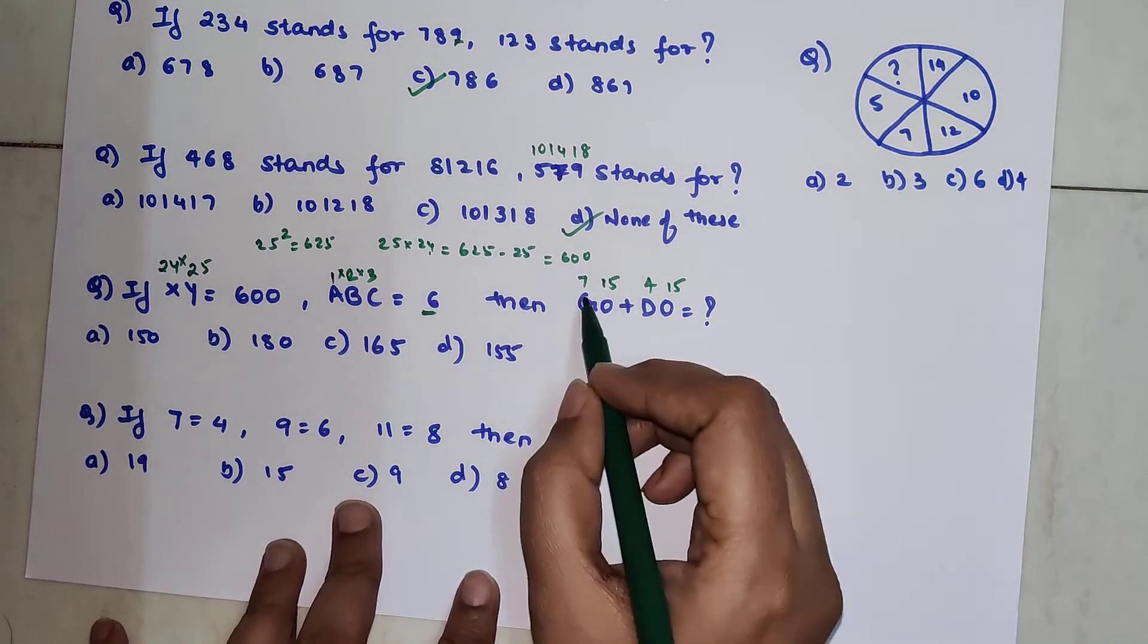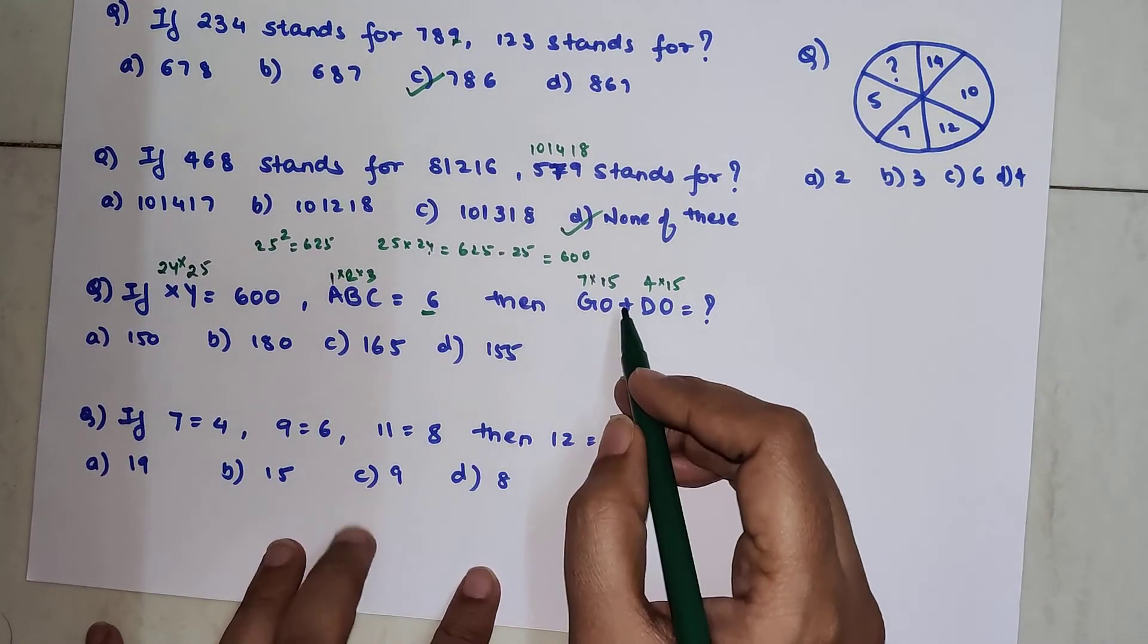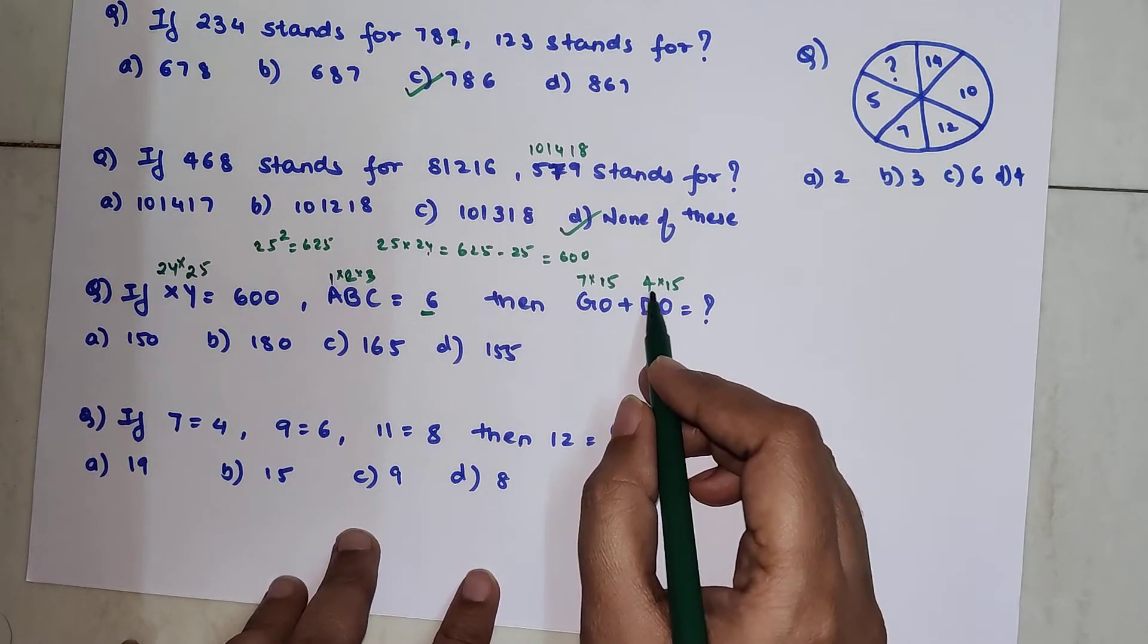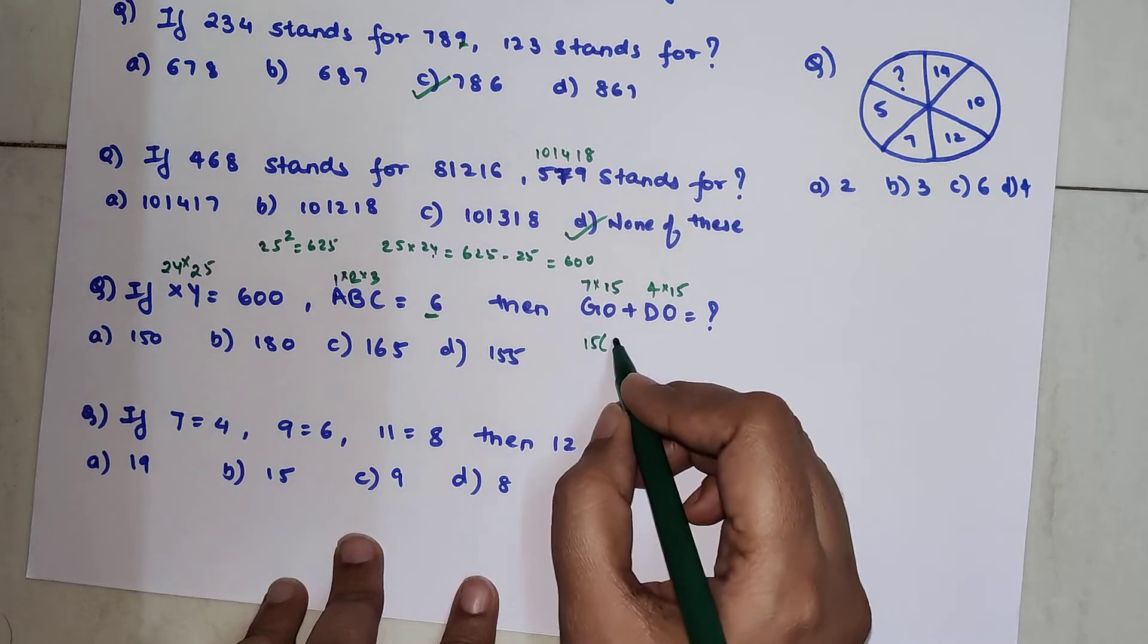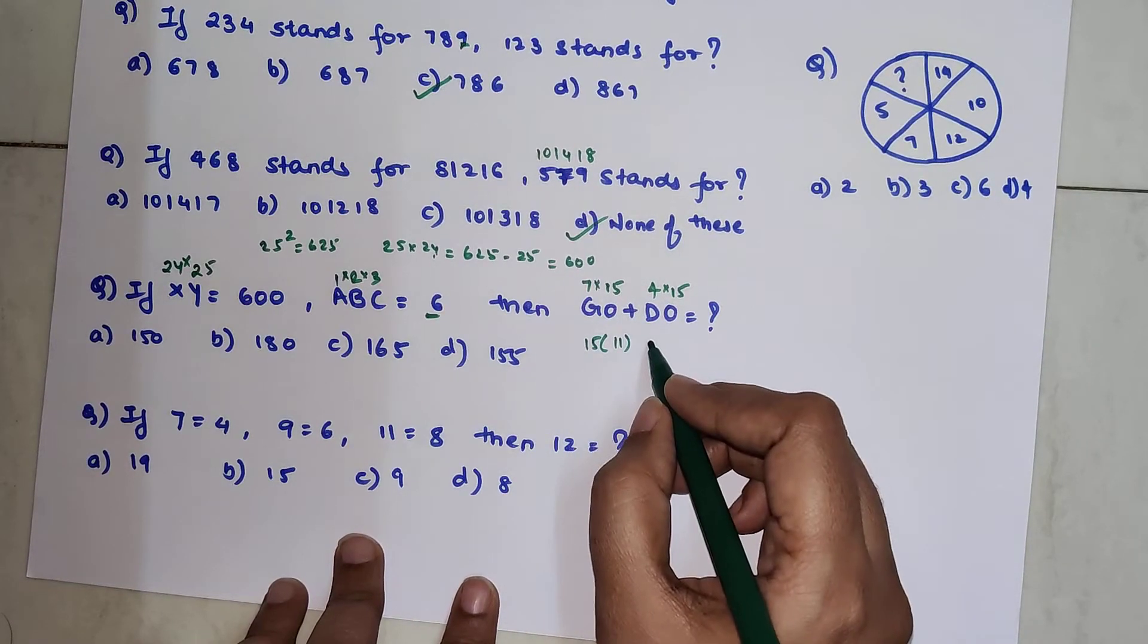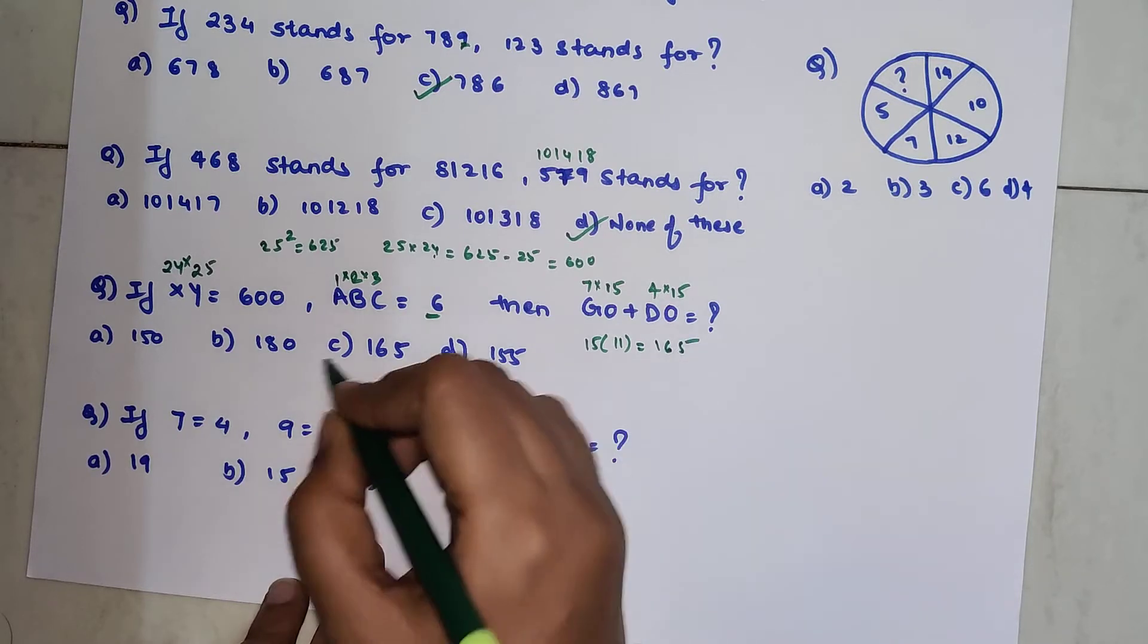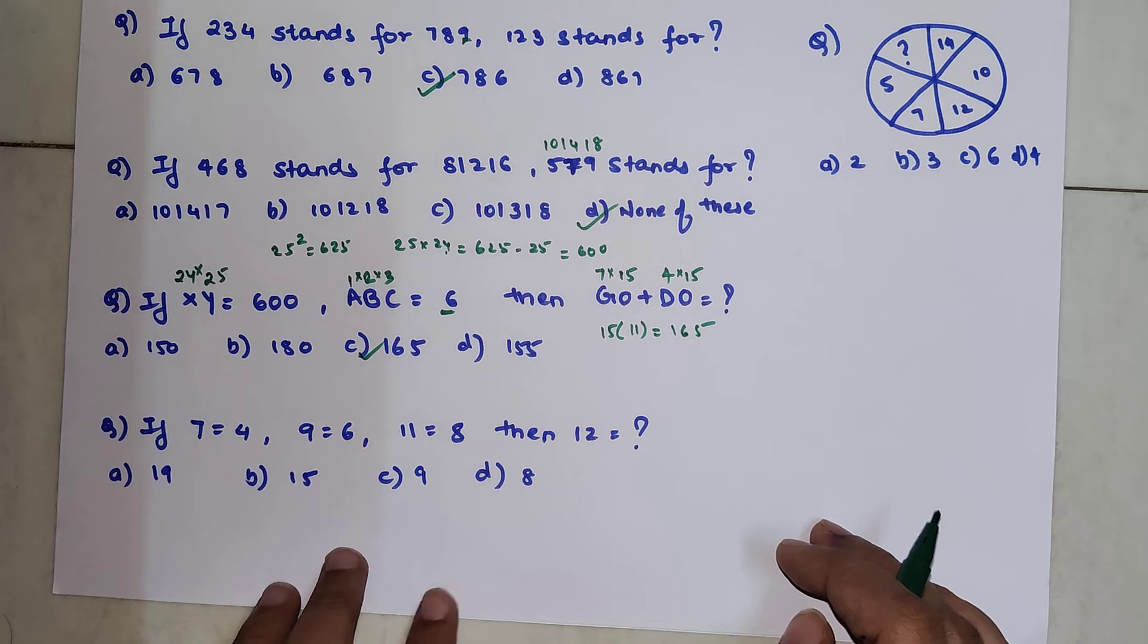So now what you do is you multiply these two and then you add them. Now please understand you can directly multiply 7 and 15 and 4 and 15 or you can take 15 out. Add 7 and 4 which is what? 11. So 15 into 11 will get you what? 165. So that is your answer.